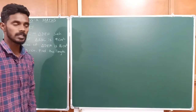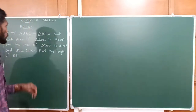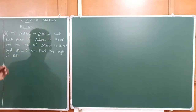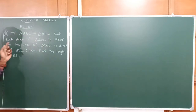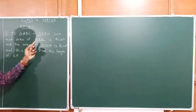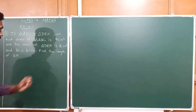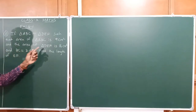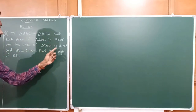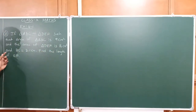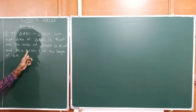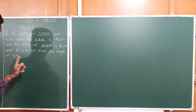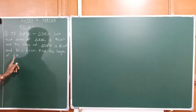Hello students, welcome to the session. Let us continue exercise 4.1, question 8. If triangle ABC is similar to triangle DEF such that the area of triangle ABC is 9 centimetre square and the area of triangle DEF is 16 centimetre square, and the length of side BC is equal to 2.1 centimetre. Find the length of EF.